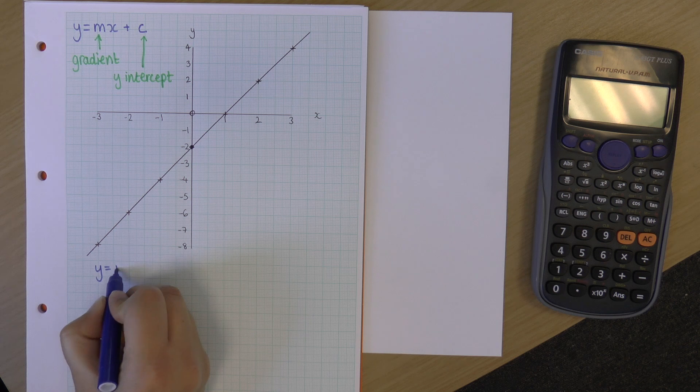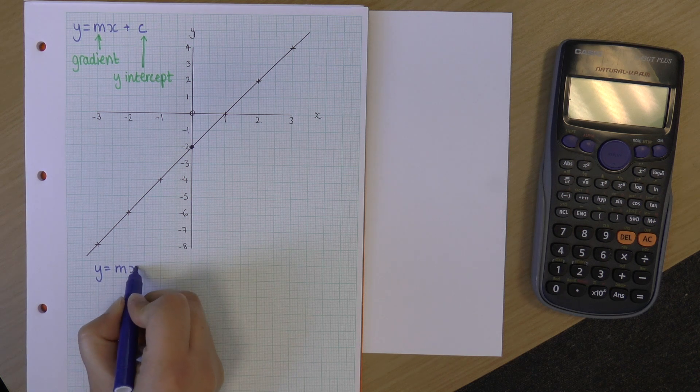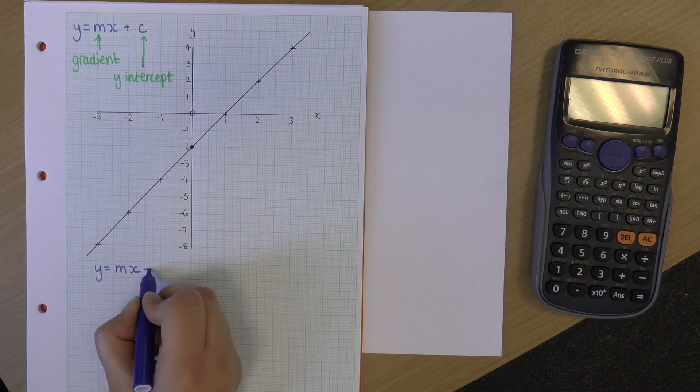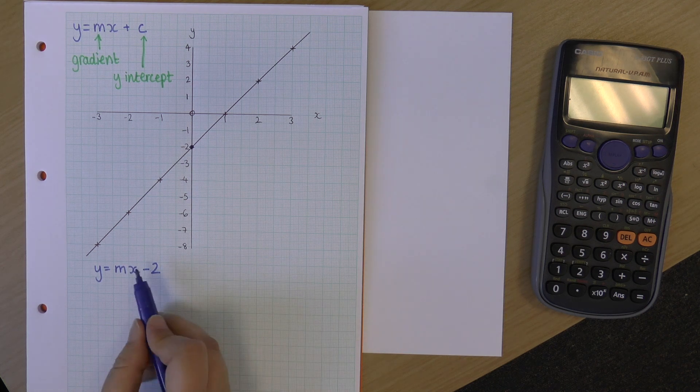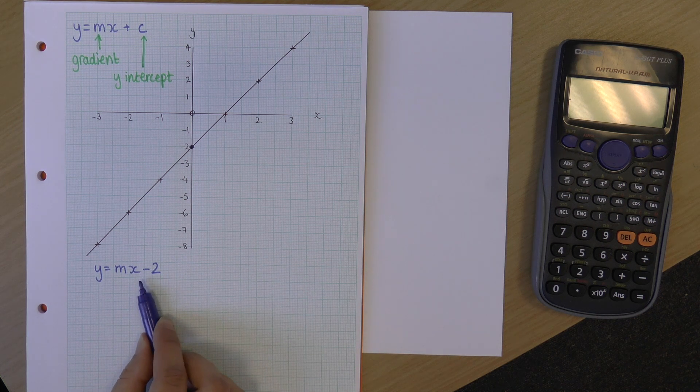So, I don't have my gradient yet, so I'm still going to leave that as m. So, I've got y equals mx minus 2. So, my y-intercept is minus 2.